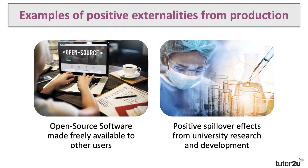Positive production externalities occur in many situations. Here's a couple of examples. One is that a business, or an organisation, might develop some open source software which is then made freely available to others to use and adapt for their own benefit. The Linux operating system is a good example of this, and Firefox, and lots of other open source development projects. Essentially, that brings down the development costs for other businesses. It has a wider social benefit, particularly when we develop industry standards.